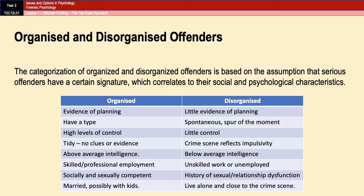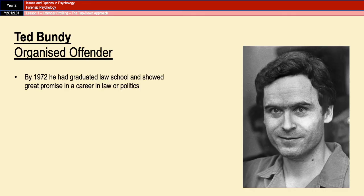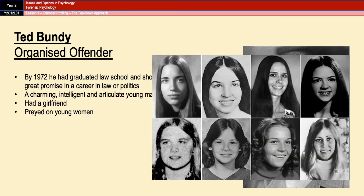We'll use some real-life examples to illustrate what an organised and a disorganised offender looks like. We'll use Ted Bundy as our organised offender. Ted Bundy graduated law school in 1972 and was classed as charming, intelligent, and articulate. He had a girlfriend and also had a type — specifically young college girls, all looking very similar. He often used a ruse to draw his victims in, such as wearing his arm in a sling or his leg in a fake cast and then asking his victims for help.